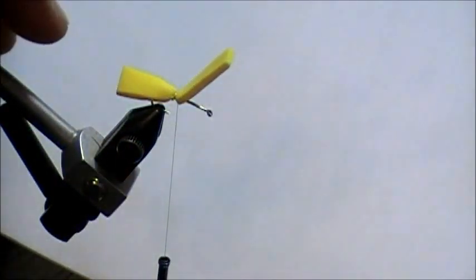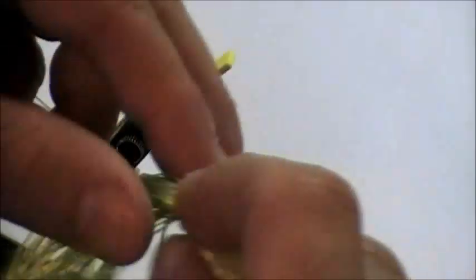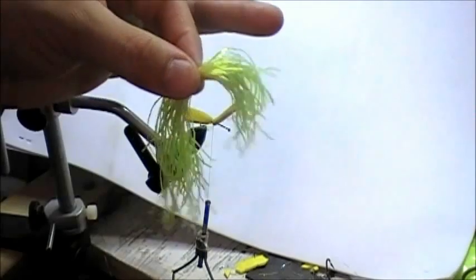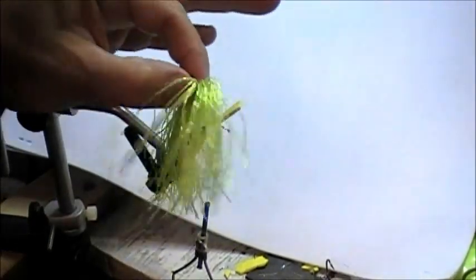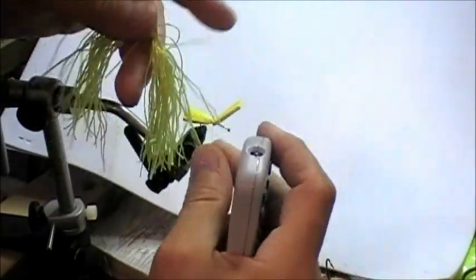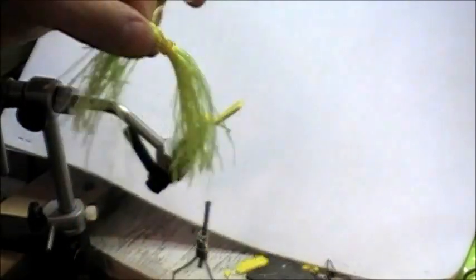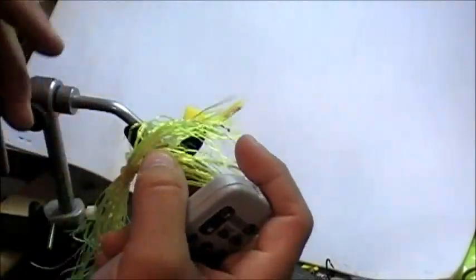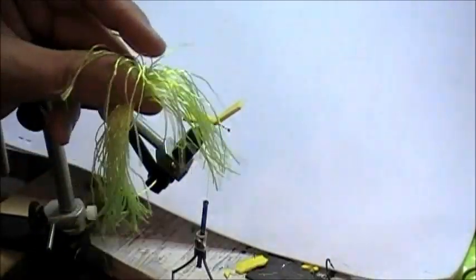For the legs, I'm going to be using skirting for some bass bugs, some bass lures for bass fishermen. This is relatively inexpensive stuff to buy. I have a chartreuse color skirting. It's flexible. This entire package may have cost 99 cents or $2, and you can see it's going to have a ton of legs that I'll be able to use for quite a long time.